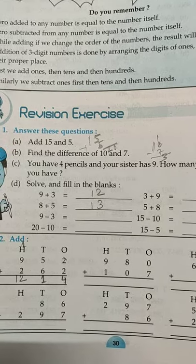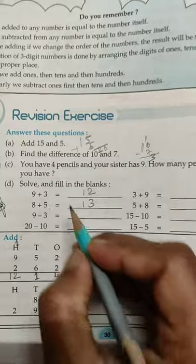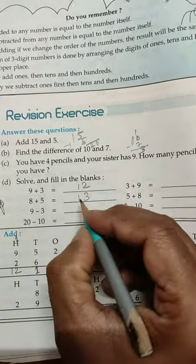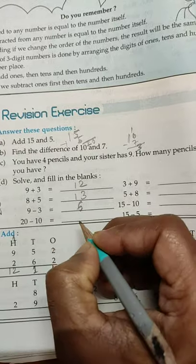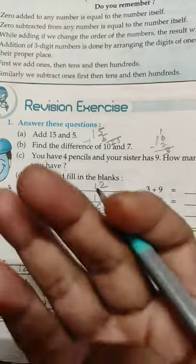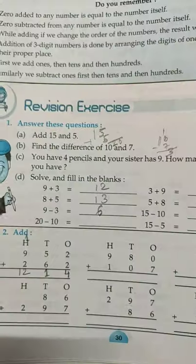Solve and fill in the blanks. 9 plus 3, 12. 8 plus 5, 13. 9 minus 3, 6. These are the single digit plus and minus. You try to solve by the counting of like this: 1, 2, 3 and minus also.